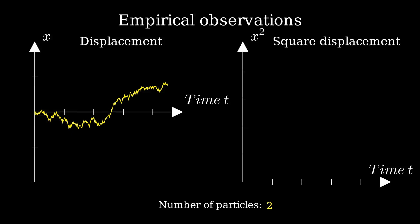If we then repeat the process many times, we end up with an ensemble of distinct trajectories.